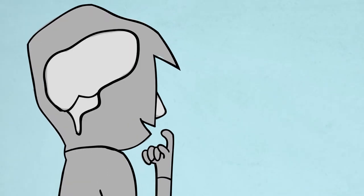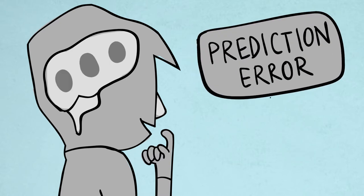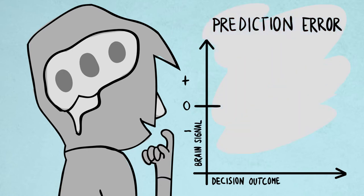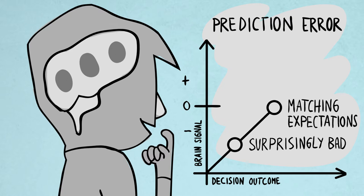It has been thought that in the brain only one signal is responsible for learning. This signal is called a prediction error. If we represent it in a graph, then it would increase linearly, going from a negative signal if something surprisingly bad happens, to no signal change if things match our expectations, to a positive signal if something surprisingly good happens.